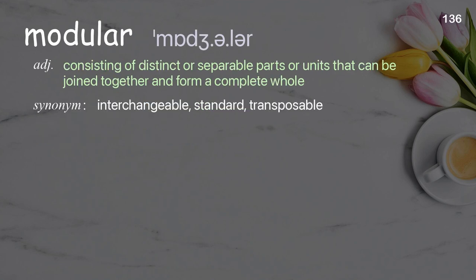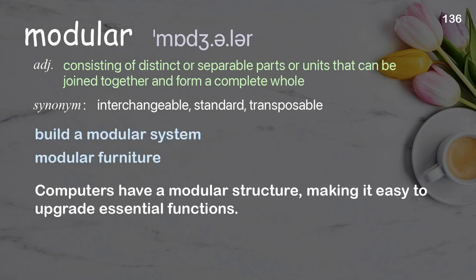Modular: consisting of distinct or separable parts or units that can be joined together and form a complete whole. Examples: Build a modular system. Modular furniture. Computers have a modular structure, making it easy to upgrade essential functions.